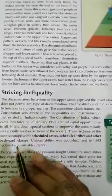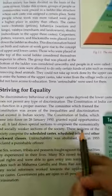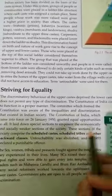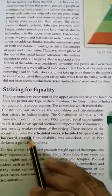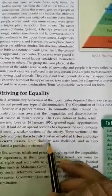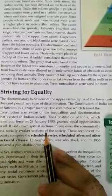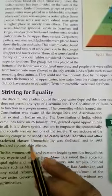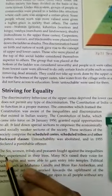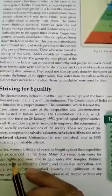These sections of society comprise the Scheduled Castes, the Scheduled Tribes and Other Backward Classes. Untouchability was abolished and in 1955 declared a punishable offence.